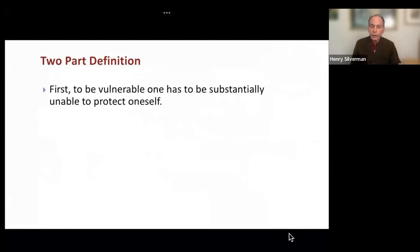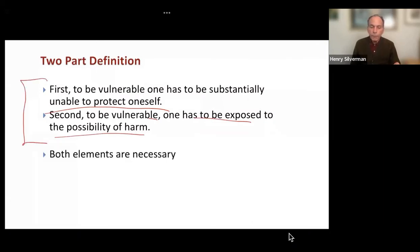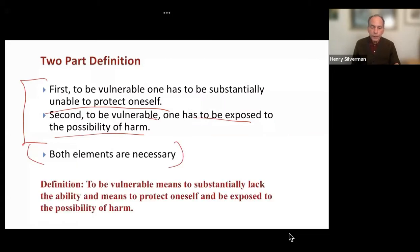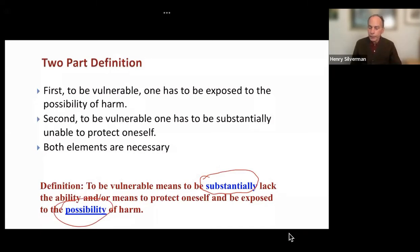To be vulnerable, one has to be substantially unable to protect themselves, and second, one has to be exposed to the possibility of harm. It's actually a two-part definition — both elements are necessary. To be vulnerable means to substantially lack the ability and means to protect oneself and be exposed to the possibility of harm. The two significant words in this definition are 'substantially lack the ability' and 'exposed to the possibility of harm.' I'll return to this definition later in this presentation.